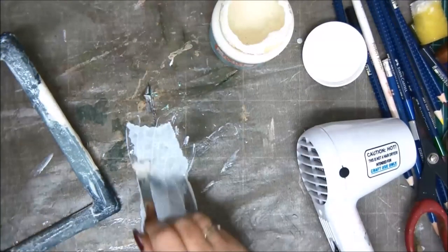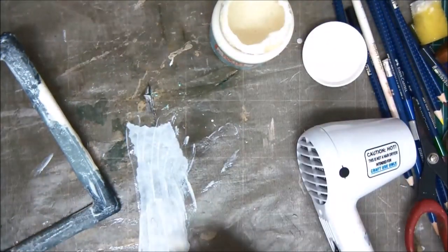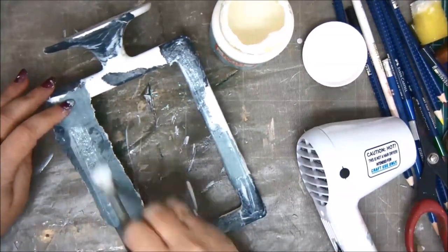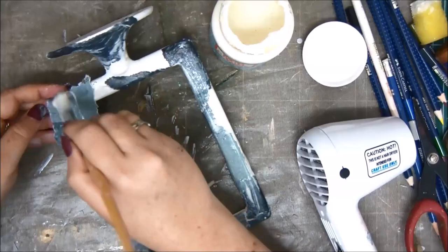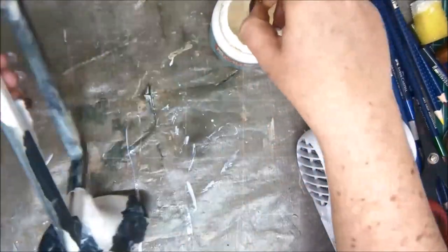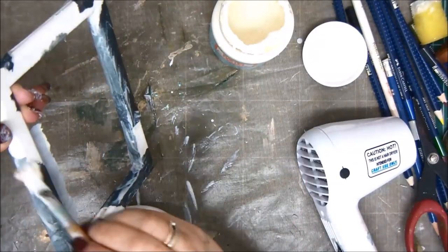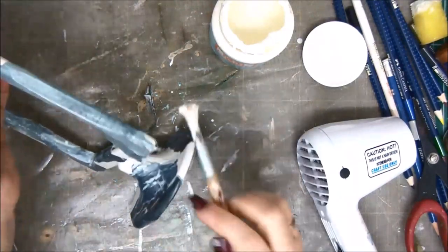So you basically create sort of a collage on your frame with different pieces of tissue paper that you made. And because the paper is very thin, it's very easy to wrap it around the frame even though the frame has lots of curves and not straight corners.